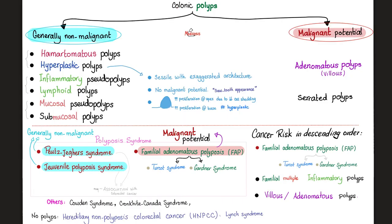The polyps in your colon are generally non-malignant, but sometimes they are malignant — especially adenomatous or villous adenomatous polyps and serrated polyps. There are many diseases and syndromes where we have many polyps in the colon, and these include familial adenomatous polyposis, but exclude Lynch syndrome, because Lynch is non-polyposis.